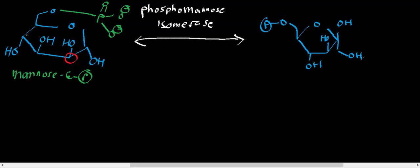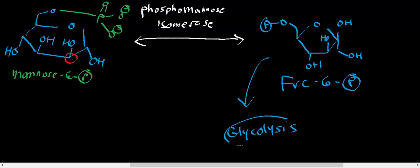So mannose is very common in biosynthesis reactions of carbohydrates, but it's not one of the major catabolic carbohydrates, although there is a catabolic pathway as we can see. And this is fructose 6-phosphate, right? And so fructose 6-phosphate is then just going to enter glycolysis at that point.